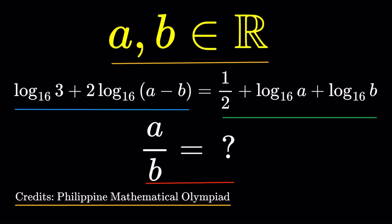Hello, it's Tom Fletch here. Here's an item on logarithmic equations. So a and b are real numbers such that the following equation is true, and we're asked to find all possible values of a over b. Credits to the Philippine Mathematical Olympiad for this item. As usual, pause this video if you'd like to give this item a try. But if you're done, let us dive into the solution.